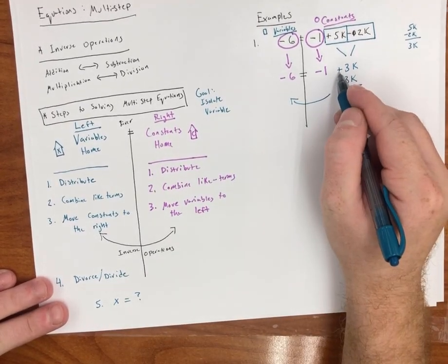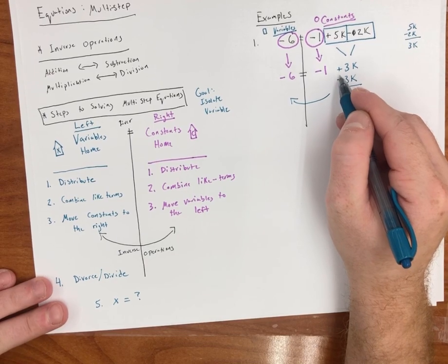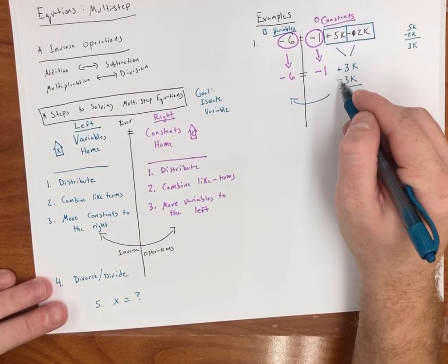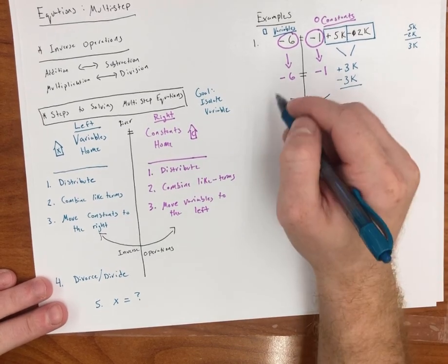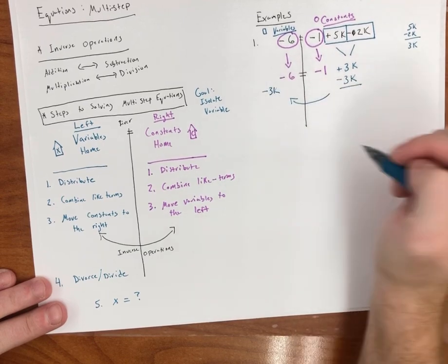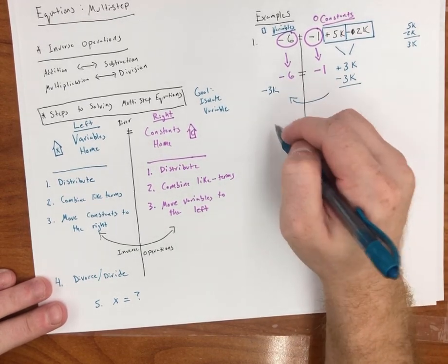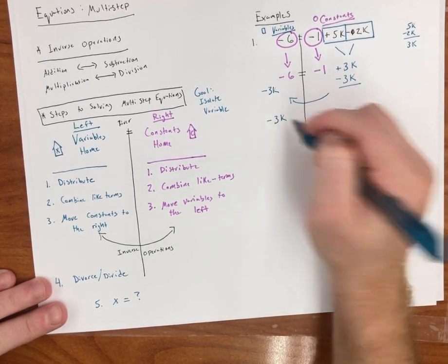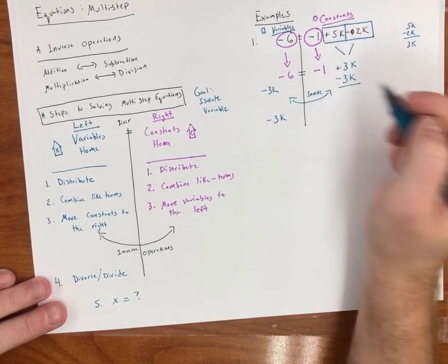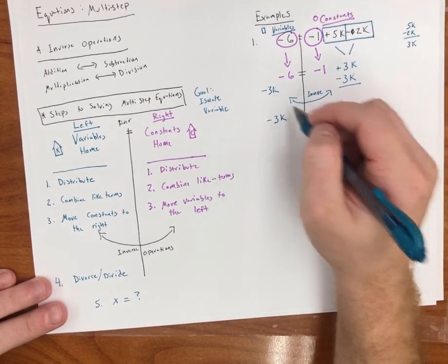Remember, inverse operations. I'm adding, subtracting. Inverse operation of addition is subtraction. So plus 3k minus 3k. What I do to one side, I have to do to the other. Now we have nothing over here with the variable. So I just bring that down. Remember, we're doing inverse operations here. I subtract the 3k.